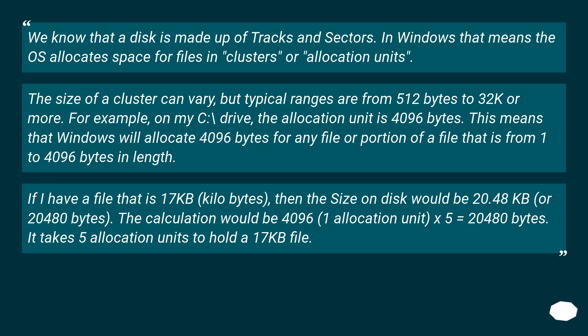This means that Windows will allocate 4096 bytes for any file or portion of a file that is from 1 to 4096 bytes in length. If I have a file that is 17 kilobytes, then the size on disk would be 20.48 kilobytes, or 20,480 bytes. The calculation would be 4096 × 5 = 20,480 bytes — it takes 5 allocation units to hold a 17-kilobyte file.